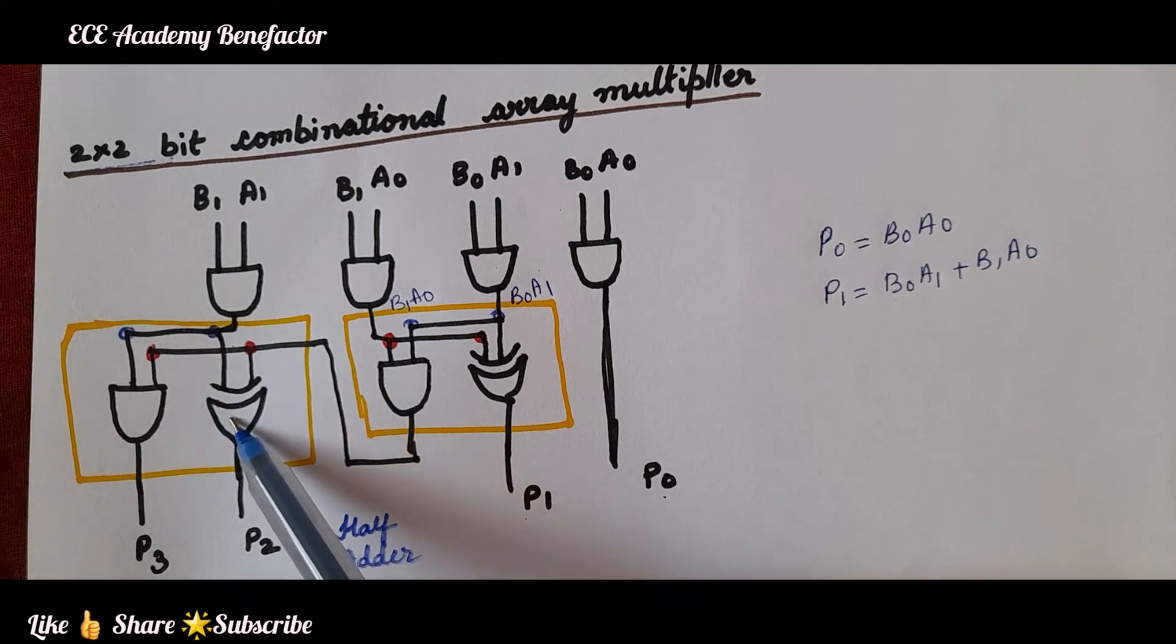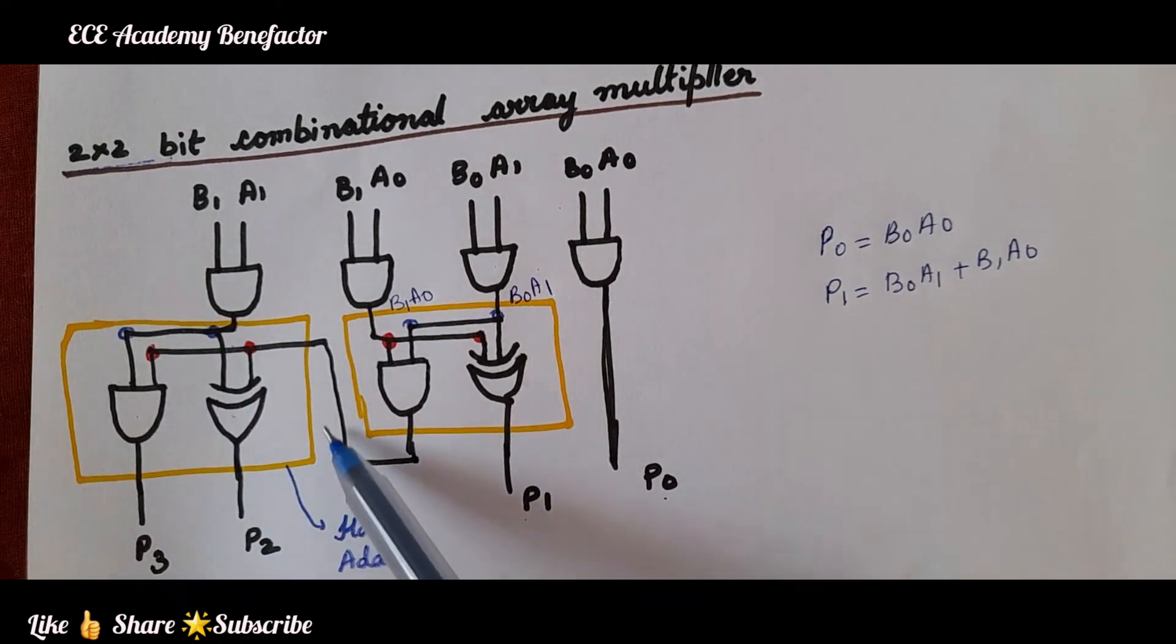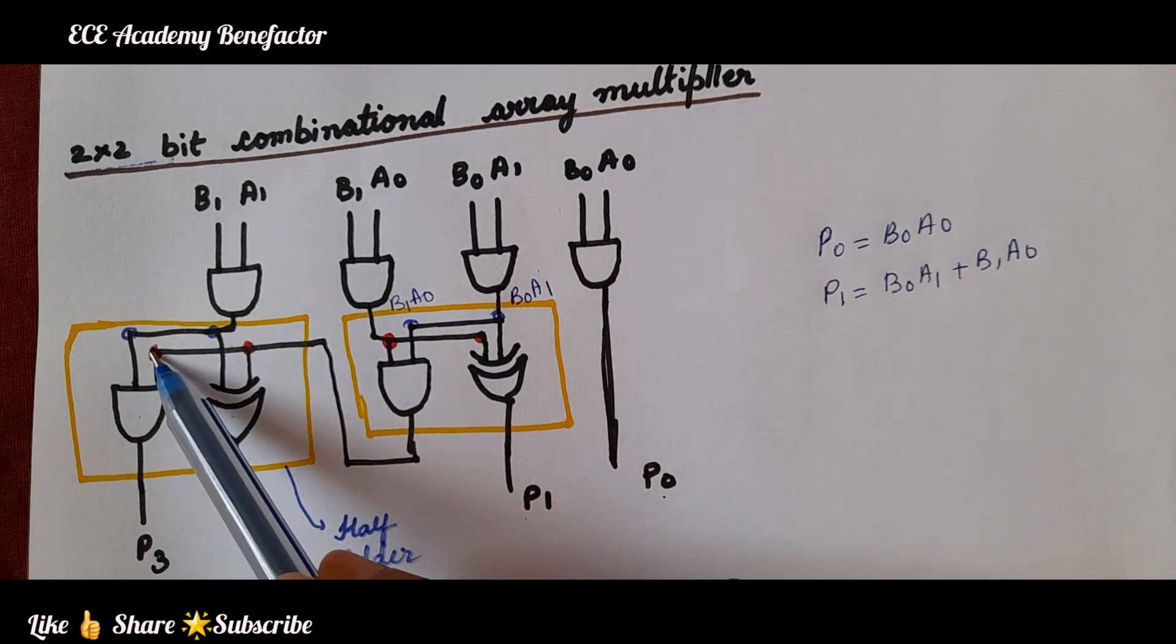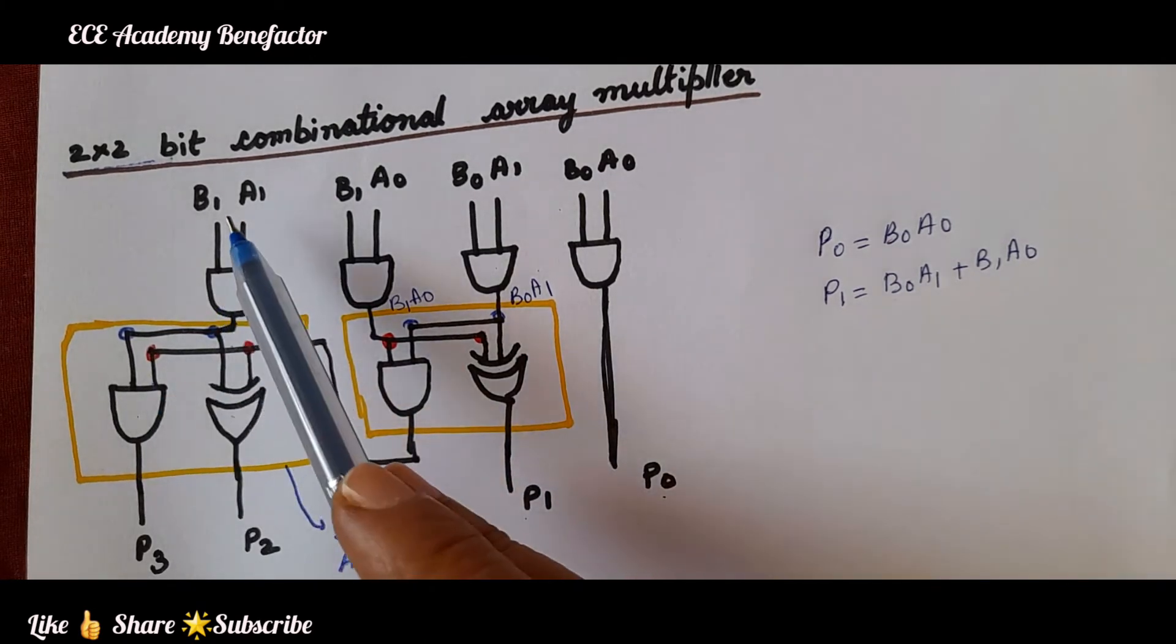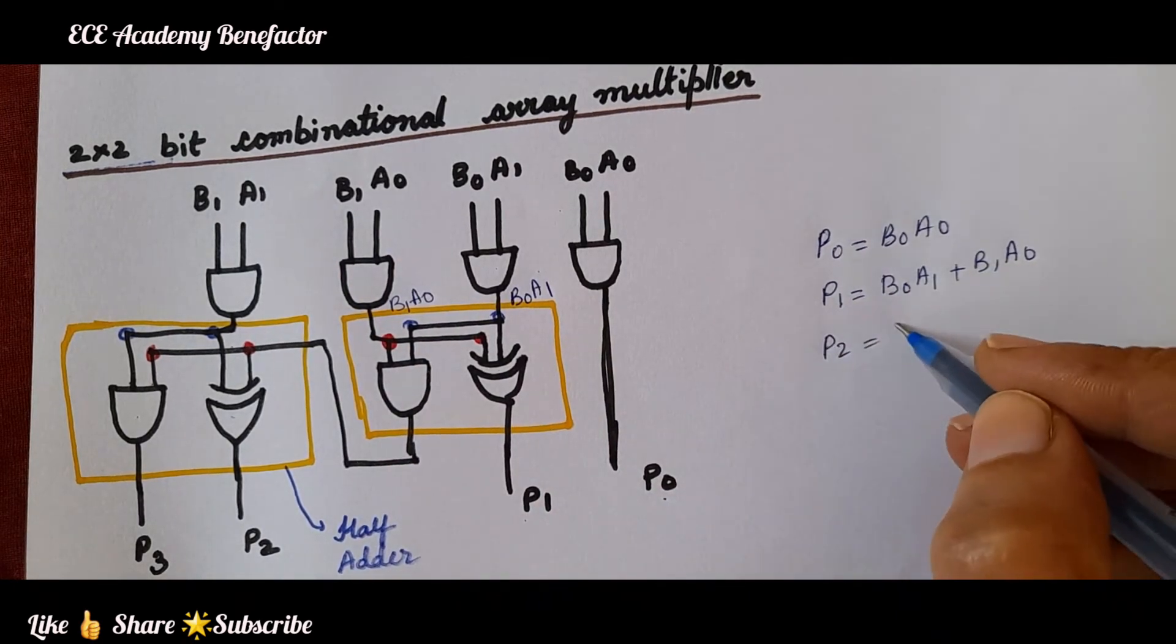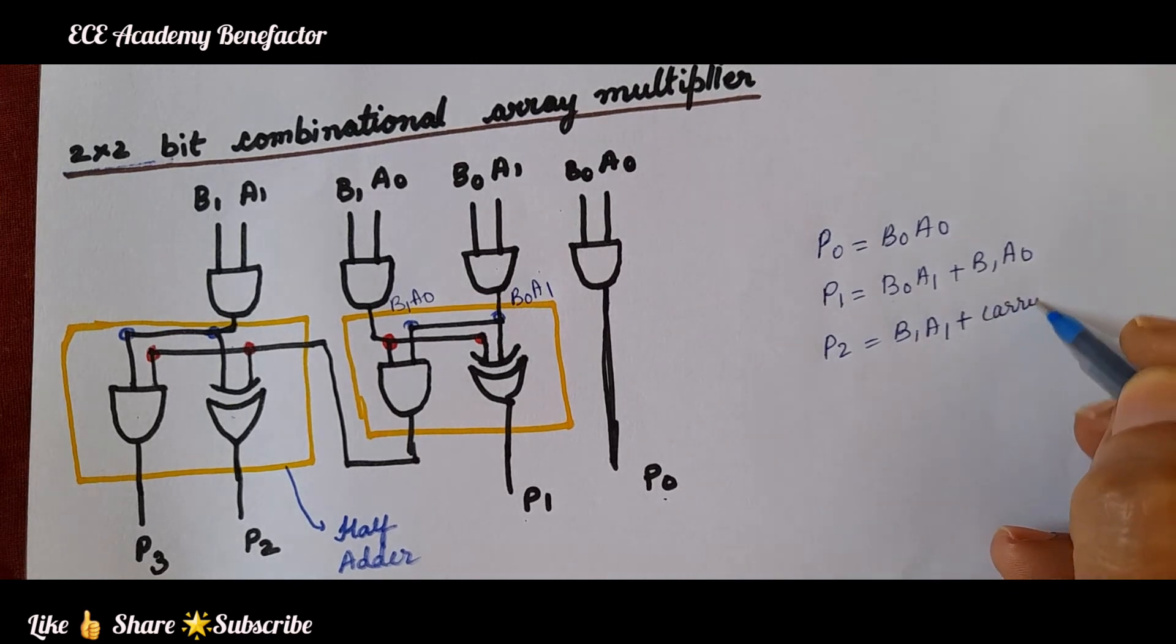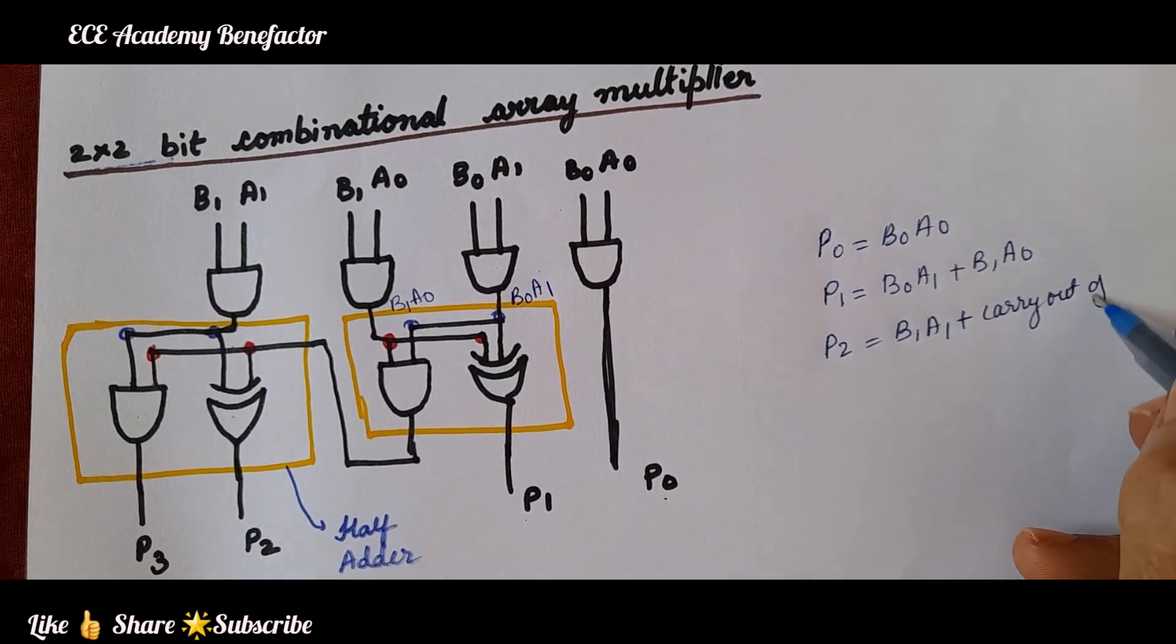Here also the half adder is comprising of XOR gate and AND gate. This carry is given to both the gates, XOR gate and AND gate. The term, what is p2 here? p2 is b1a1 plus carry out of p1.